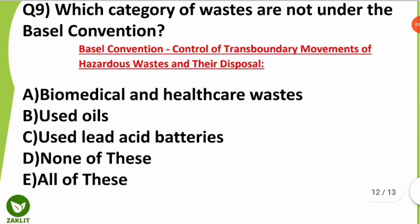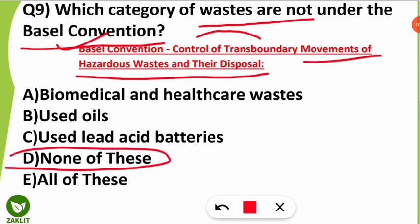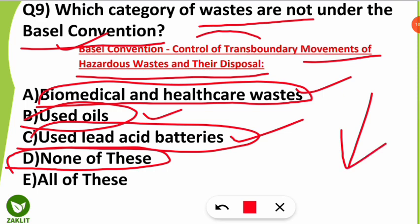The ninth question was from the Basel Convention. You should know that the Basel Convention was the convention to control the transboundary movement of hazardous waste and their disposal from country to country. Please comment when this convention was signed in the comment section. The question asked which category of wastes is not under the Basel Convention — and the answer is none of the above, because all three listed — biomedical and healthcare waste, used oils, and used lead-acid batteries — are covered under the Basel Convention.